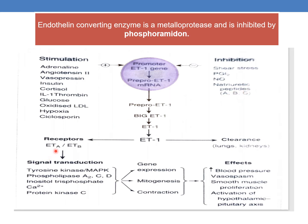The ETA and ETB receptors are G protein coupled receptors and they signal transduction through mediators like tyrosine kinase, MAP kinase, phospholipase A2, C and D, inositol triphosphate, calcium ions, and protein kinase C. The effects include gene expression, mitogenesis, and contraction, which lead to increased blood pressure, vasoconstriction and vasospasm, smooth muscle proliferation, and activation of the hypothalamic pituitary axis.